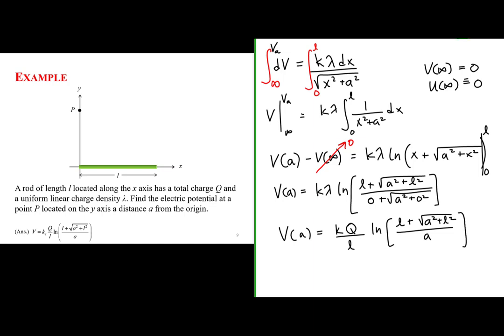We have now found the electric potential at the point y equals A on the y-axis due to this line of charge. Thank you very much.